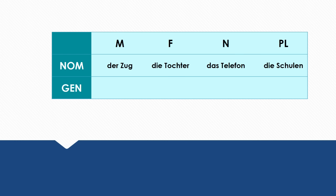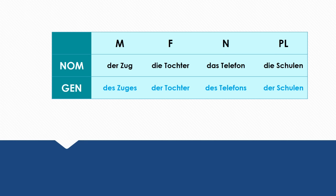Und weiter geht's! Next set: 'der Zug' (the train), 'die Tochter' (the daughter), 'das Telefon' (the phone), 'die Schulen' (the schools). The genitive forms are: 'des Zuges' (of the train), 'der Tochter' (of the daughter), 'des Telefons' (of the phone), 'der Schulen' (of the schools).